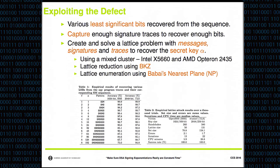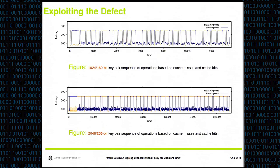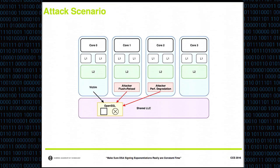Your setup used three cores — is that absolutely necessary? What if you only have two cores? We used this three-core scenario because it was easier to see what the degrading process and the flush-and-reload process are each doing. I believe it's possible with two cores — one running the victim and the other running the combined attack. If you have only a single core, it's not possible.